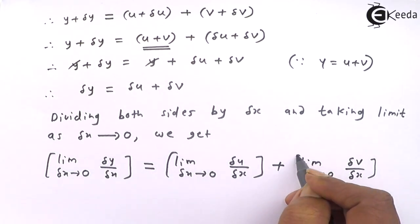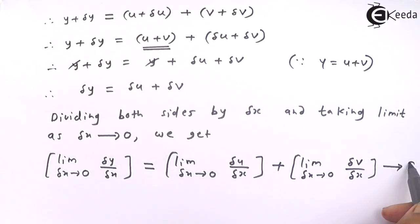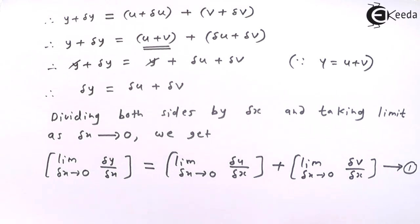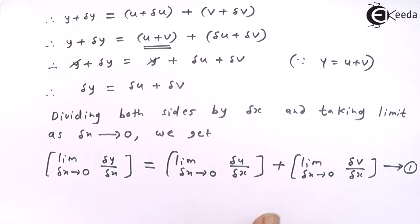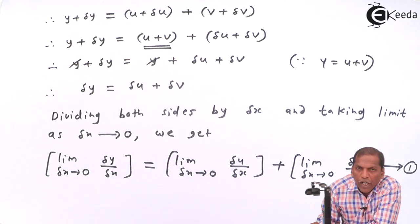Now let us denote this as equation number 1. Now in the theorem we have given that u and v are differentiable functions of x.